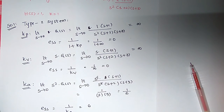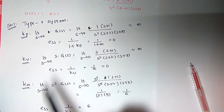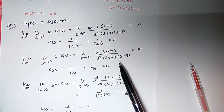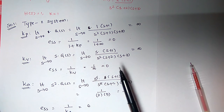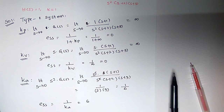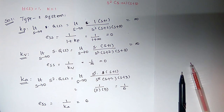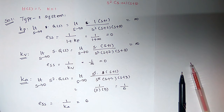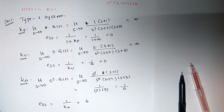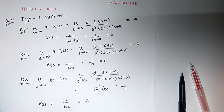From this problem we can infer: as it is a type 2 system, the error due to step input and the error due to ramp input are both equal to 0. There exists only an error due to parabolic input. As the type increases, the error decreases. For type 2, only parabolic input produces a nonzero error; all other errors are 0.